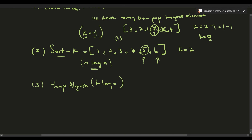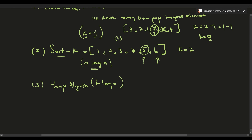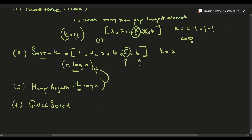When we pop the largest element from a heap, it costs O(log n), and since we have to pop k times, it's going to be O(k log n), which is more efficient than O(n log n) because we don't have to sort the entire array. But surprisingly there's an even better solution, which is Quick Select — and that's what we're going to go through now.